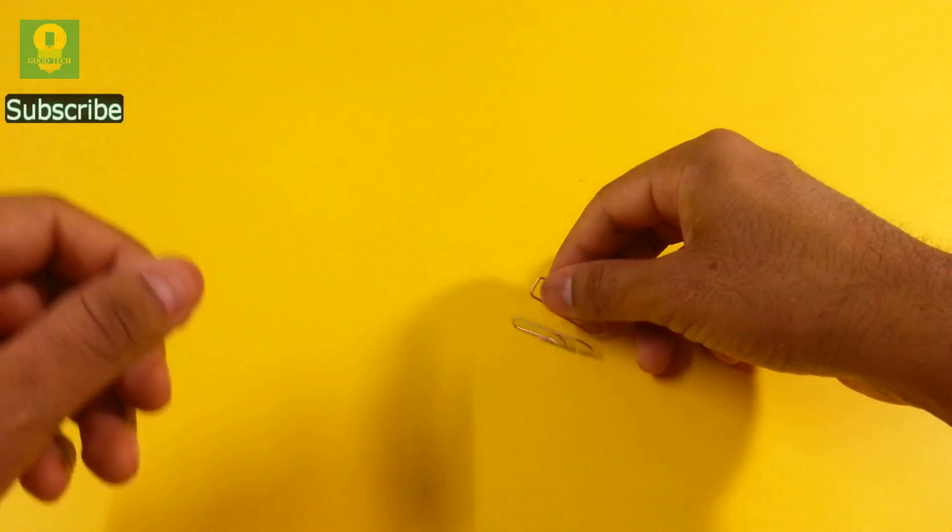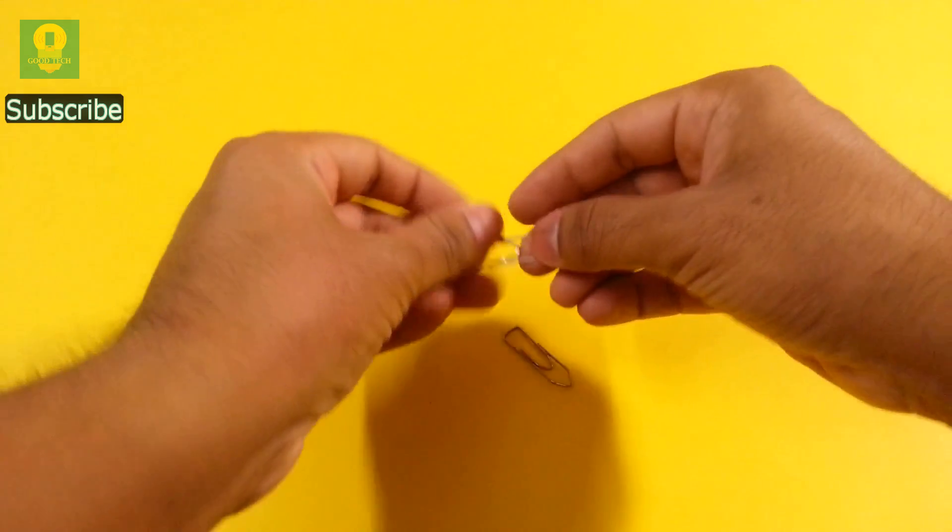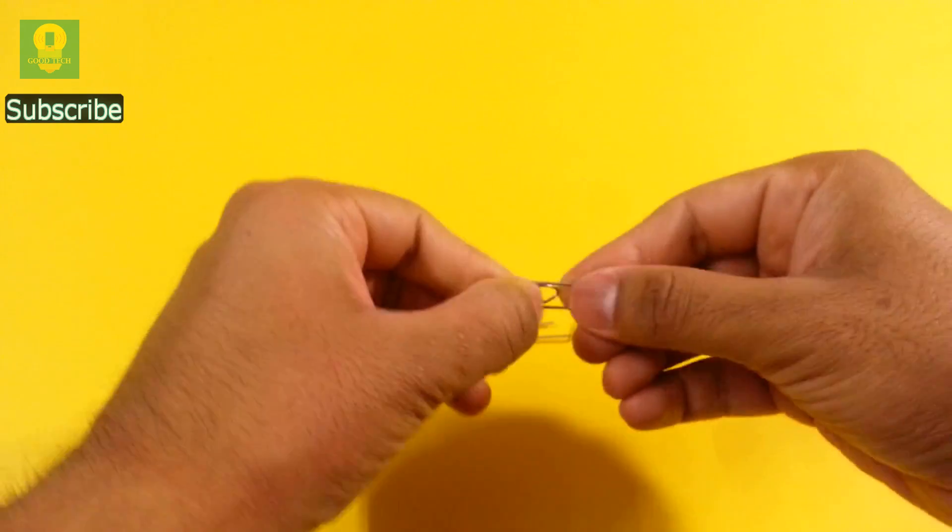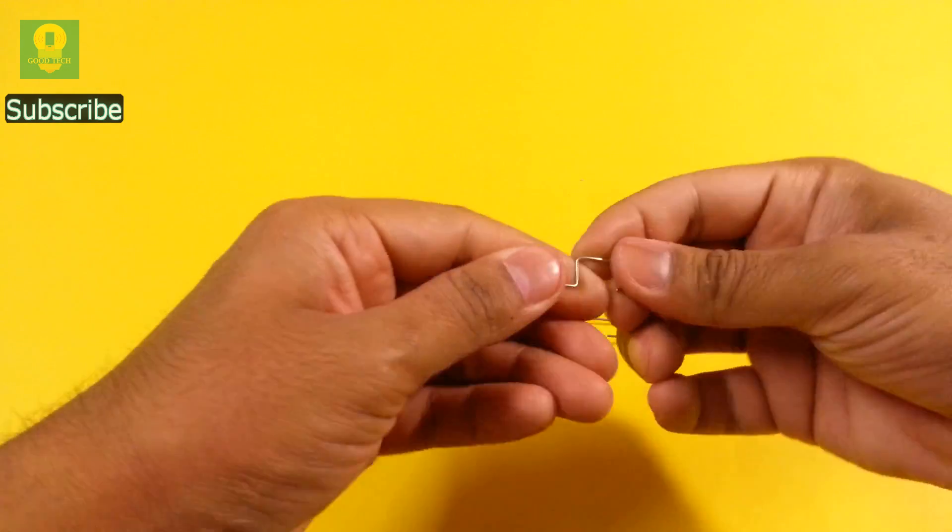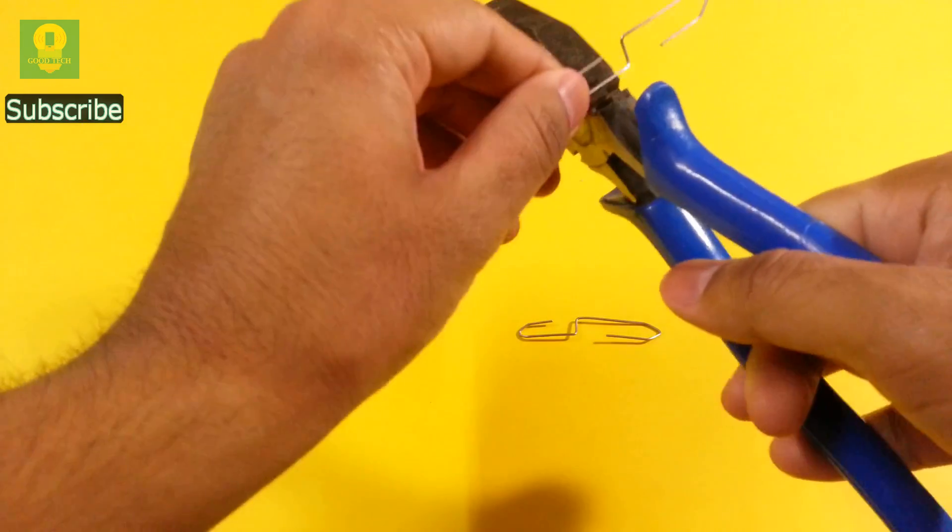To start, take two paper clips and unfold them carefully. Using pliers, cut the shorter side.